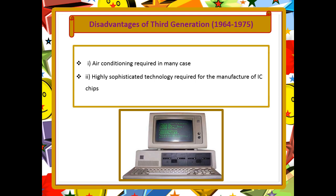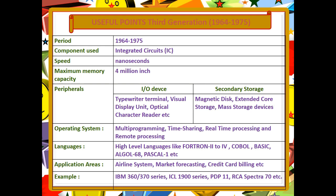Let's recall the key points of the third generation computers. The period was 1964 to 1975, and the main components used were integrated circuits. Its speed is measured in nanoseconds. The input-output devices used include typewriter terminals, visual display units, optical character readers, etc. Secondary storage includes magnetic disks, extended core storage, and mass storage devices.